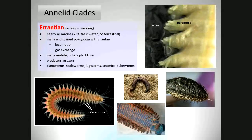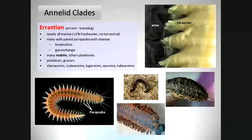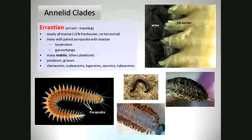At the tip of the parapodia are structures called chaetae (sometimes spelled with CH). Those are the little chitinous projections you can see at the tip. In the earthworm — the other group — they don't have parapodia, but they do have chaetae, which they use for traction in the soil to move around.